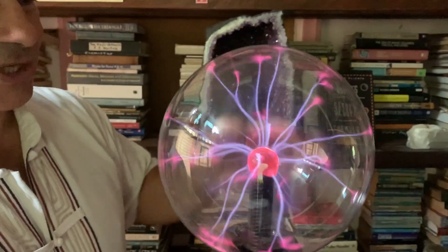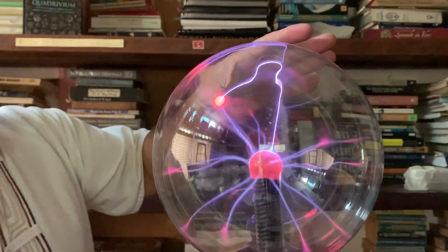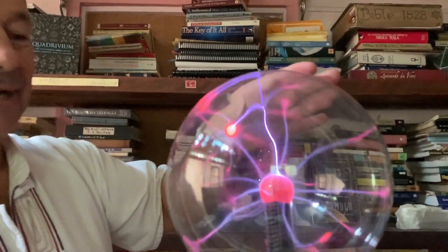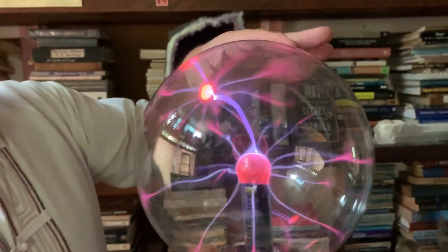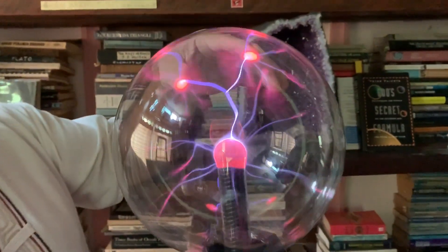And when I touch it, you can see that it's wanting to earth itself. Because it's generating, pulling energy out of the ethers, out of the space, it wants to earth itself. It wants to find grounding.